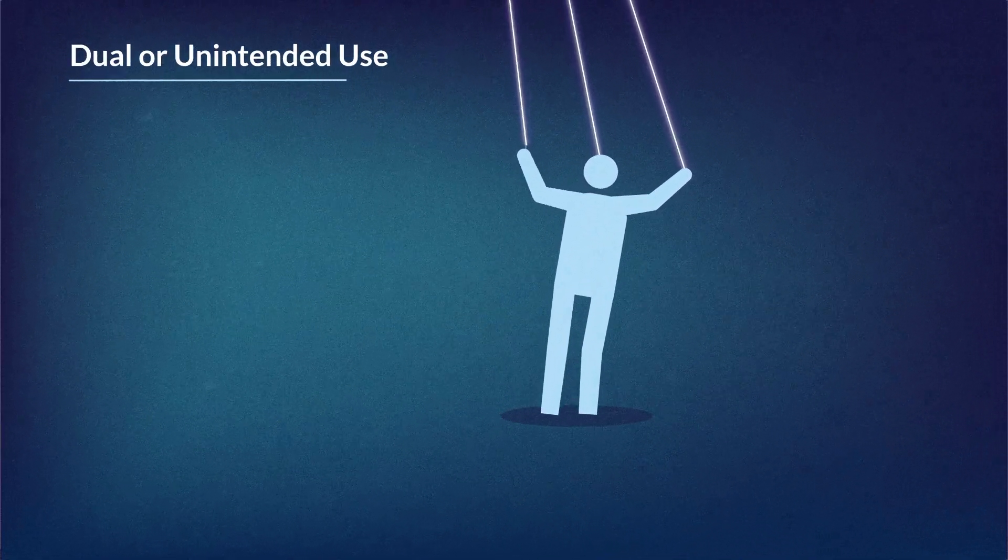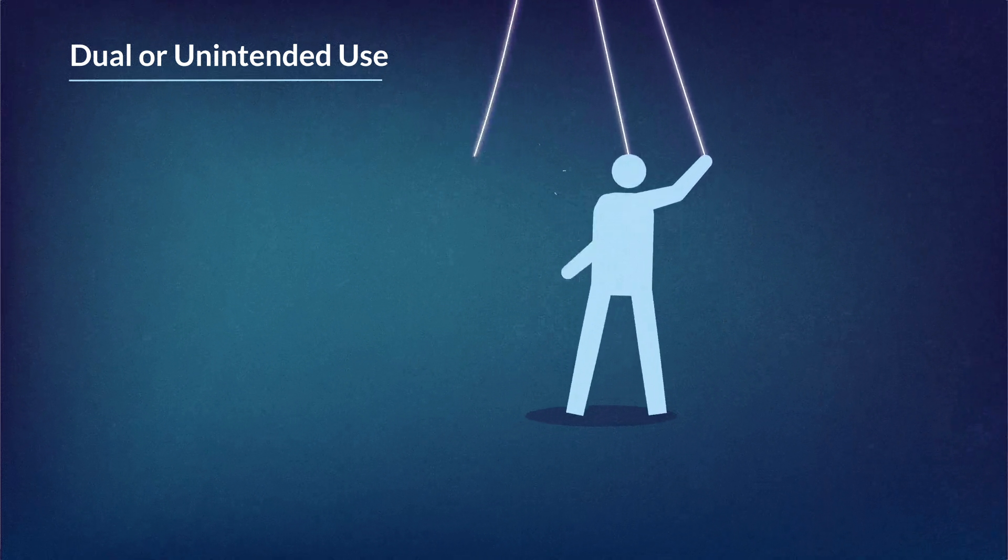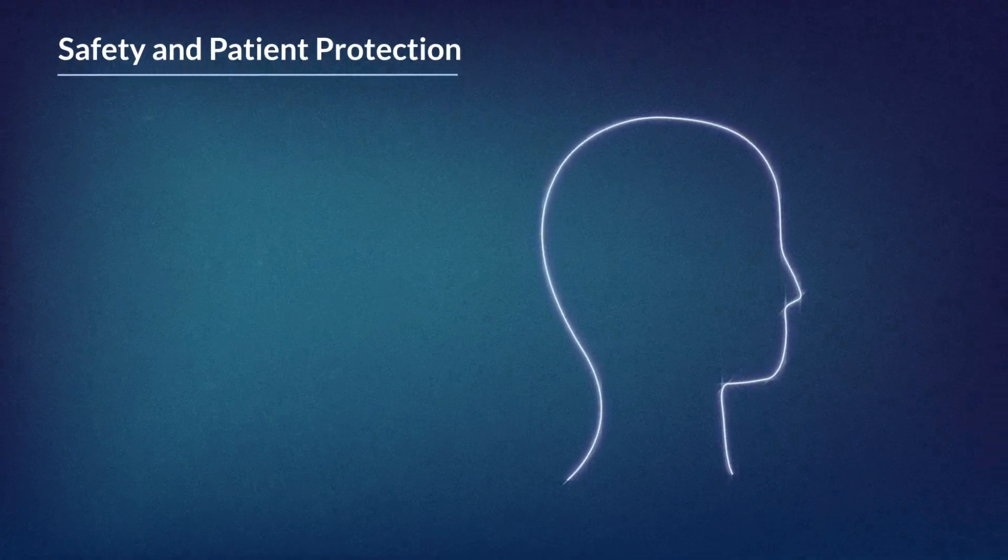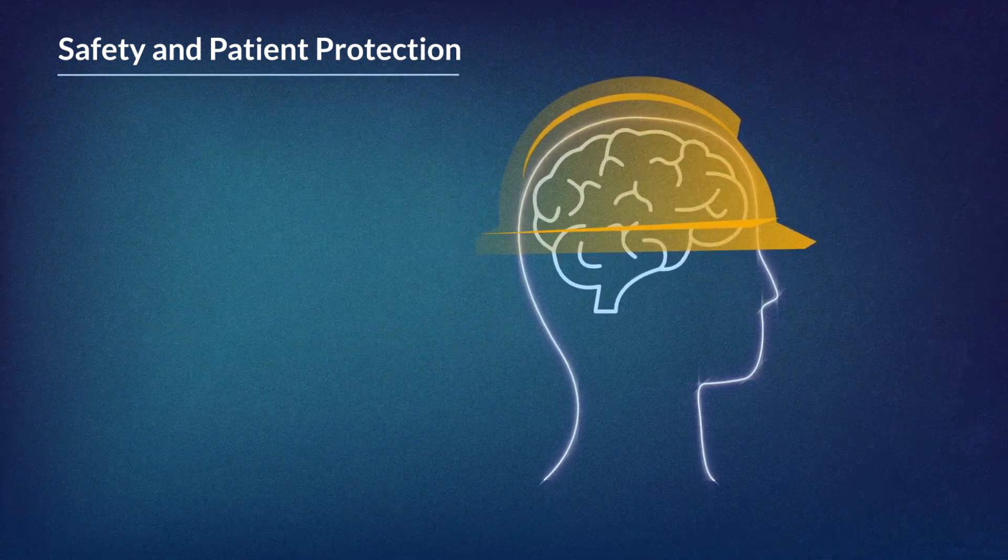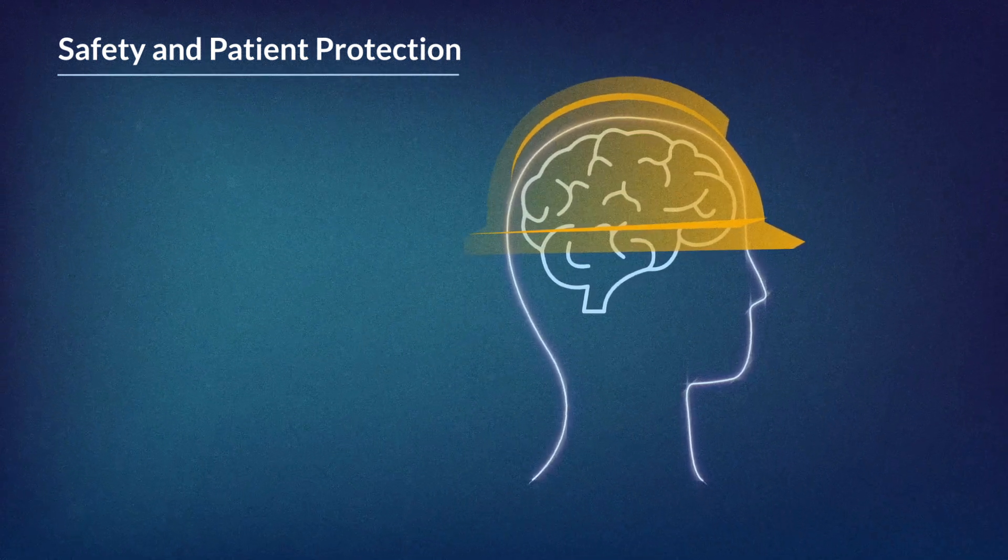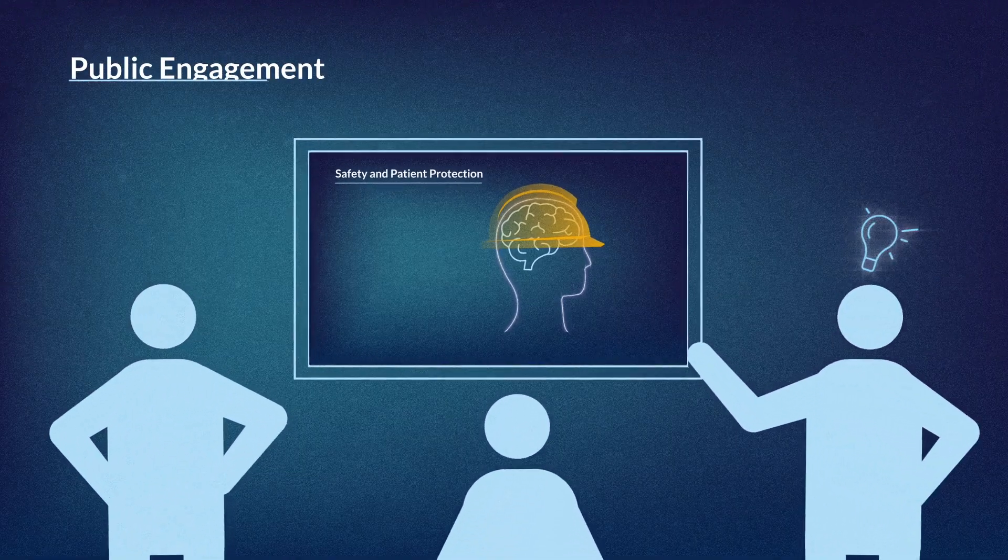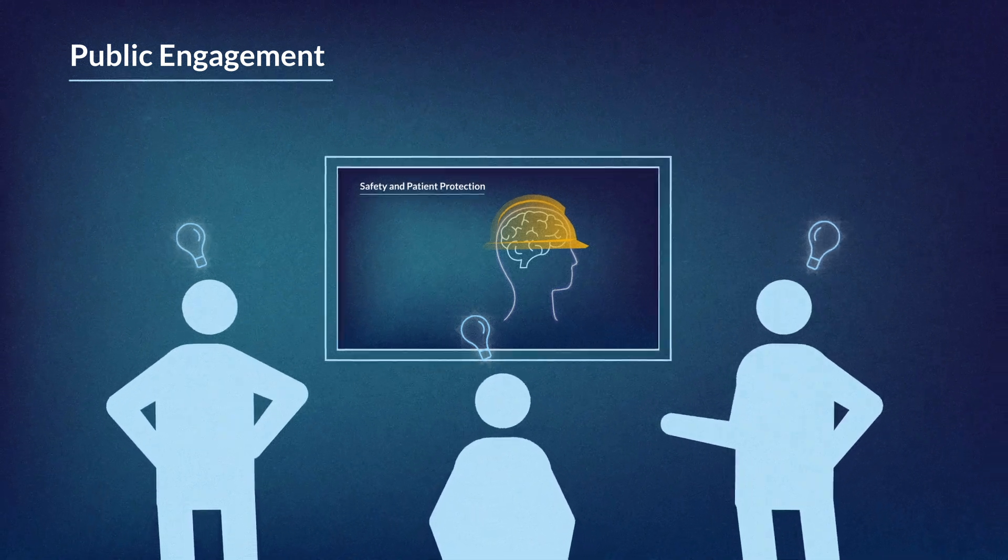Dual or unintended use: What are the potential harmful uses of brain technologies and how do we prevent misuse of them? Safety and patient protection: How do we ensure the physical, psychological and emotional safety of patients and users? Public engagement: How do we responsibly raise awareness and engage in dialogue with the public about neuroethics issues?